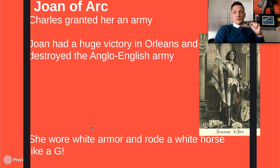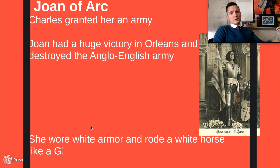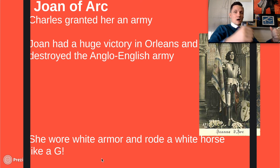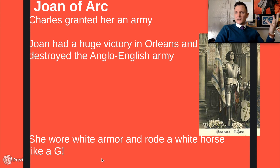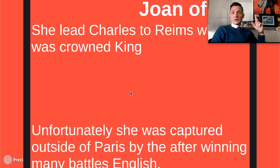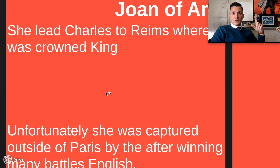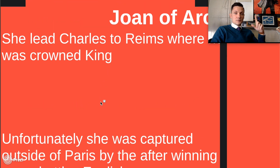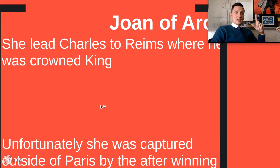She was victorious at the Battle of Orleans. She was granted an army by Charles, who said if she thought she could do it, she should go for it. Joan had a huge victory at the Battle of Orleans and destroyed an entire Anglo-Saxon English army. Like a stud, she wore white armor and rode a white horse into battle — a very prominent figure and very good military strategist. She led Charles all the way to Reims following that victory.